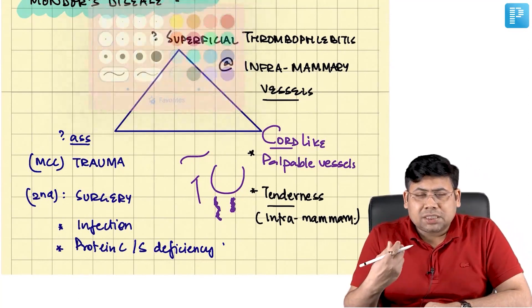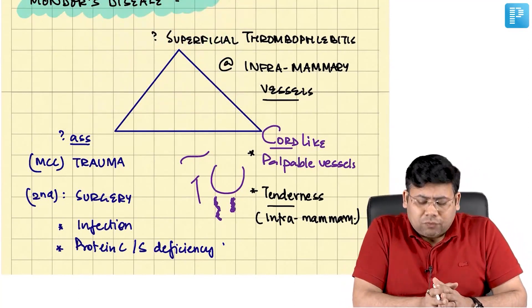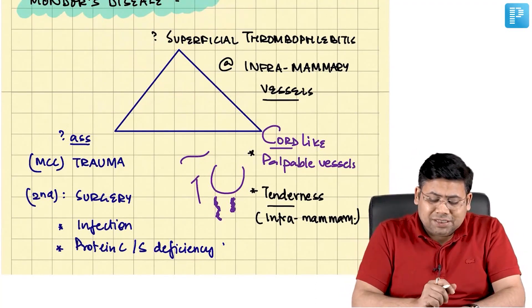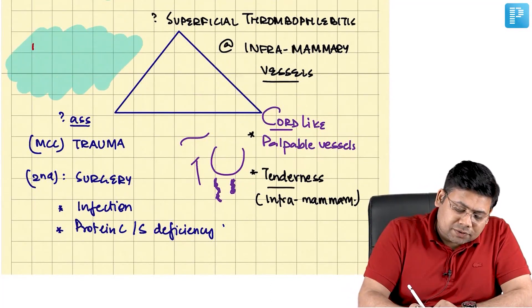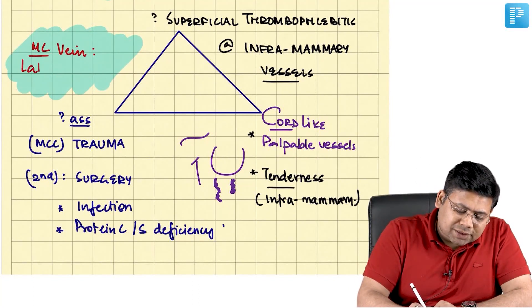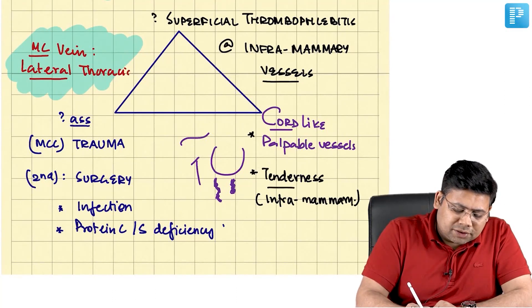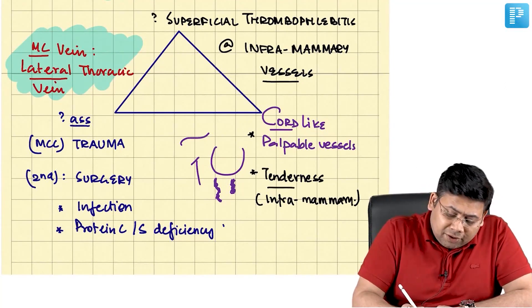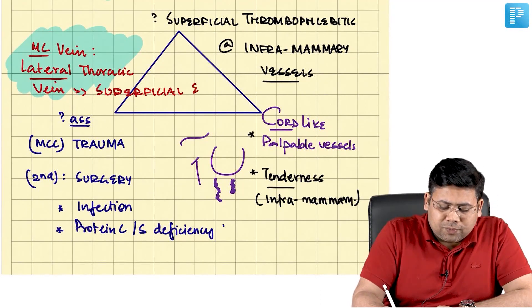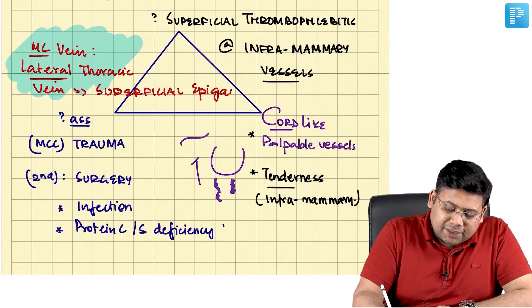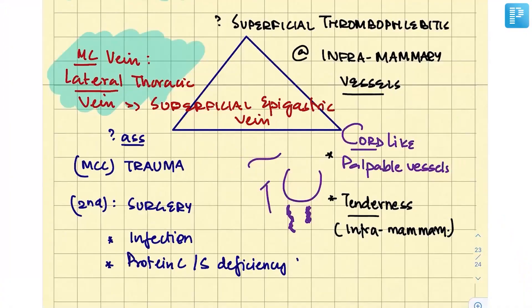What is the most common vessel involved? The most common vessel is the lateral thoracic vein, which is greater than the superficial epigastric vein. These two structures are very important.